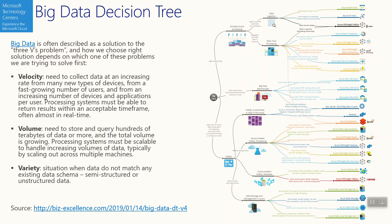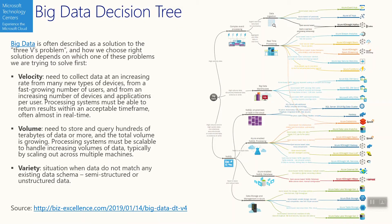The first V is velocity, when we are trying to process hundreds of thousands of events per second and trying to pre-aggregate or filter data. Another one is high volumes of data, and it can be structured or non-structured data.